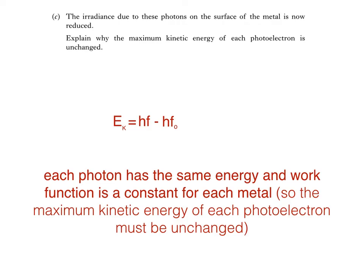What would be altered, though, is the number of electrons ejected from the metal surface. If irradiance is reduced, then less photons are incident on the metal surface. Each photon can only eject one electron, so as a result, the number of electrons ejected would decrease. And that's the end of our question.